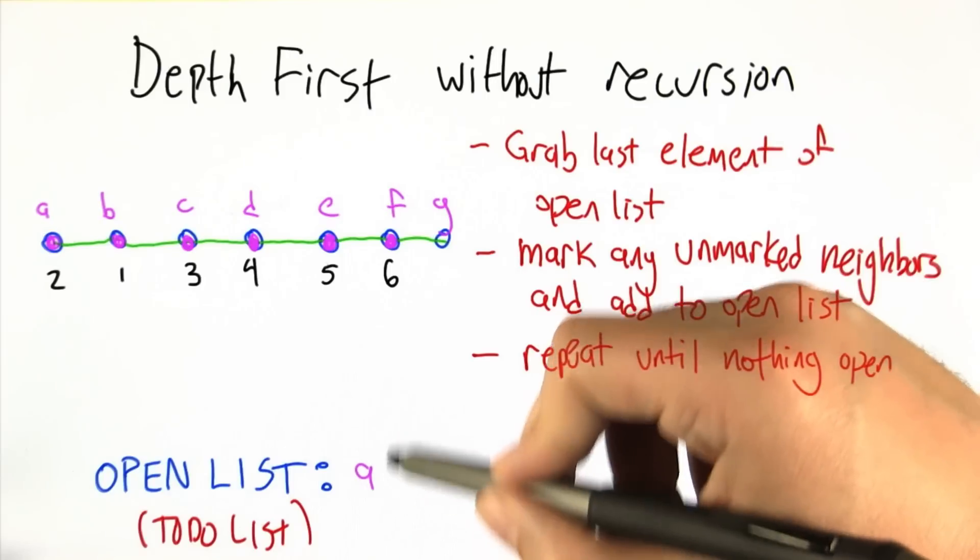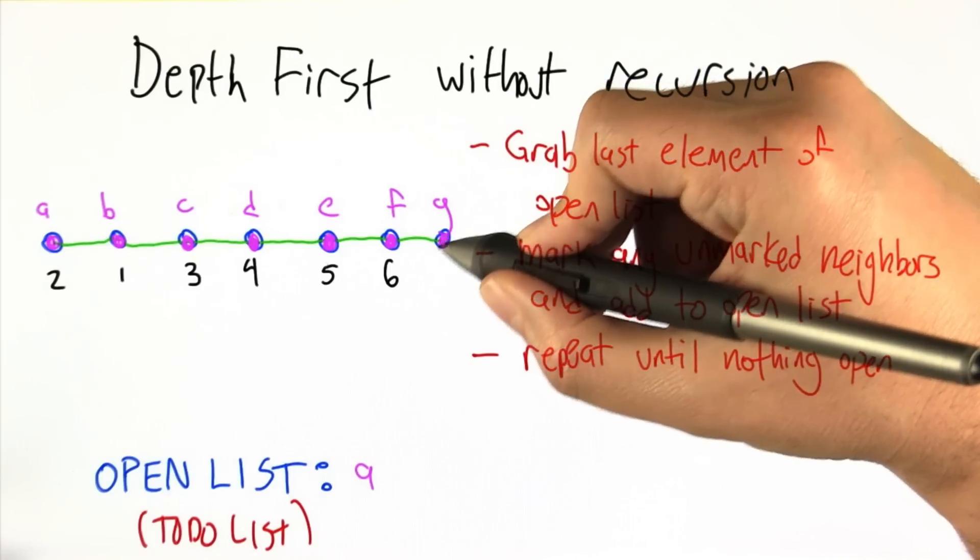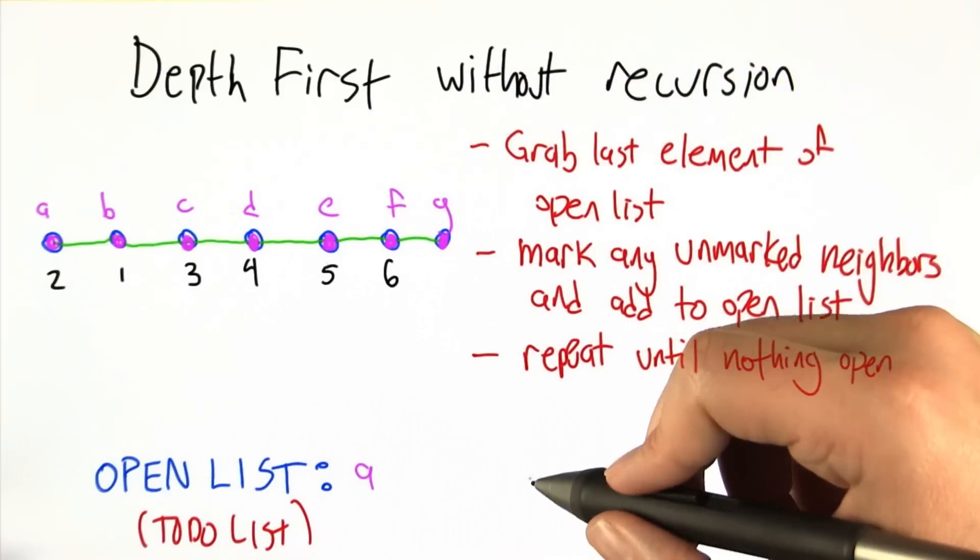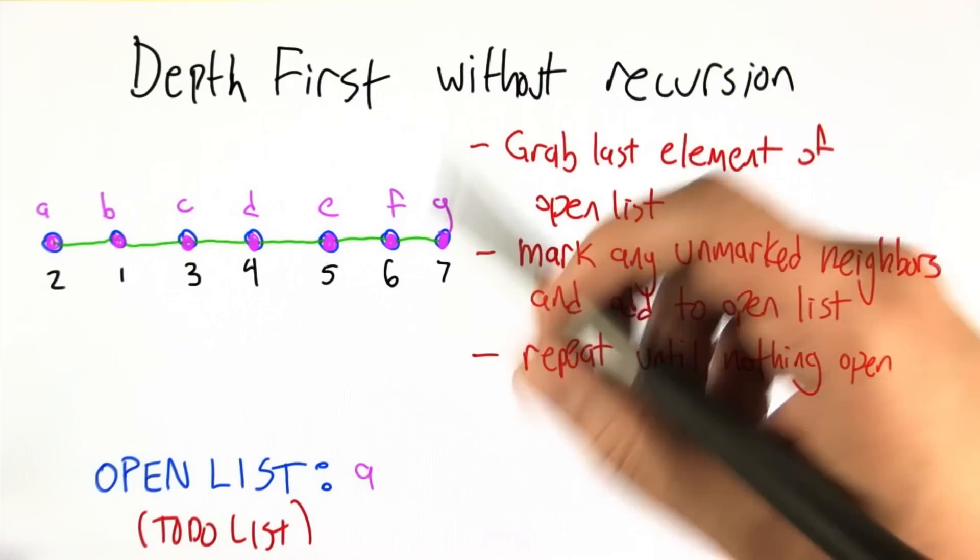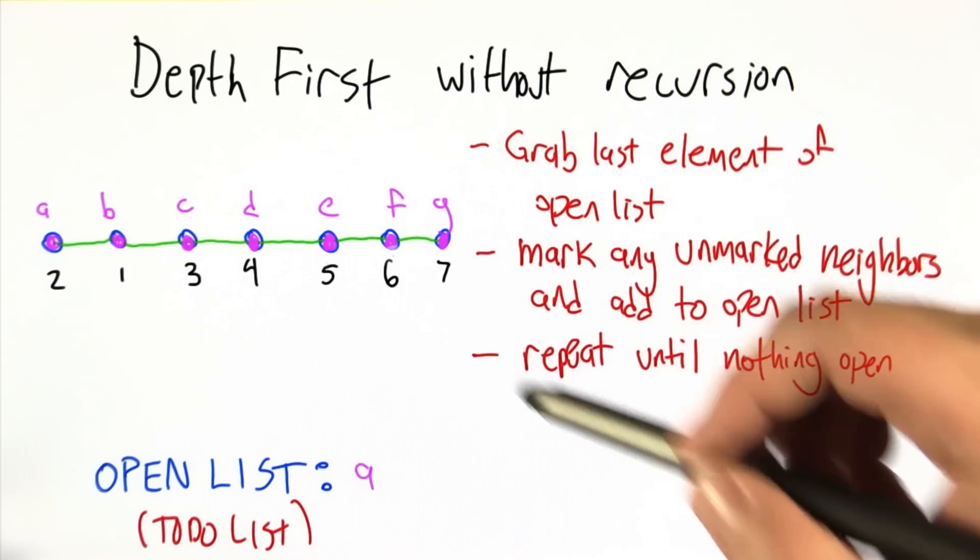Take F off the open list, add its neighbors, G and E is already done. Take G off the open list, its neighbors are all already done, nothing gets added.